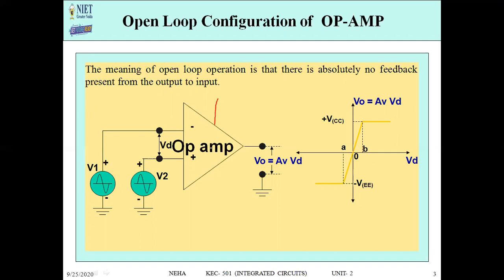We have two supply voltages: plus VCC and minus VE. The output is V0, and it is equal to the gain multiplied by the differential input voltage VD. This is the simple definition of an open loop configuration, along with the transfer curve we have already discussed in previous lectures.